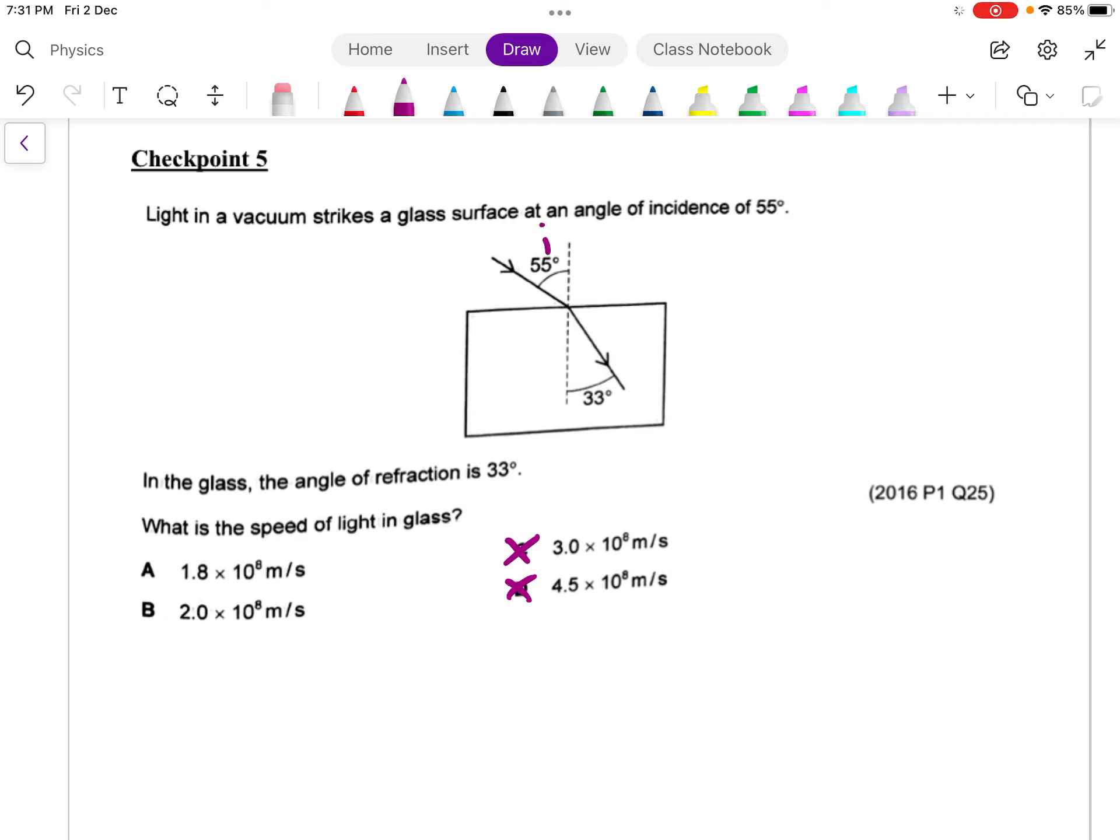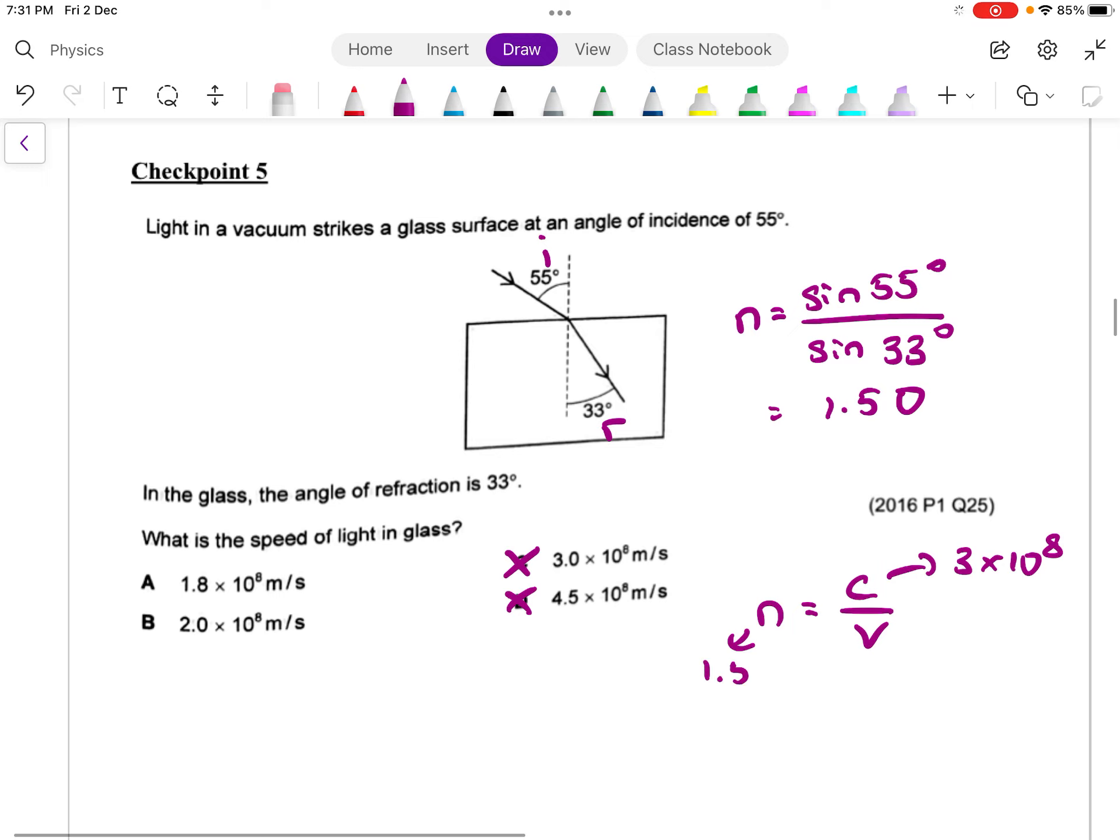N equals sine I over sine R. So N is equal to sine 55 over sine 33 degrees. Sine 55 divided by sine 33, you should get roughly 1.50. So the refractive index of the glass block is 1.5. Let's calculate what is the speed of light in the glass. N equals C over V. Notice they never give you the speed of light in vacuum. This is a question where we are required to know the speed of light in vacuum. So the speed of light in vacuum is 3 times 10 to the 8.